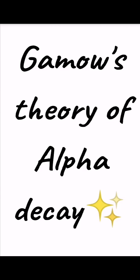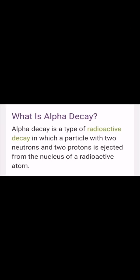But before that, you should know what is meant by an alpha particle. An alpha particle is a helium nucleus, and it has two protons and two neutrons, so it has a mass number of four.